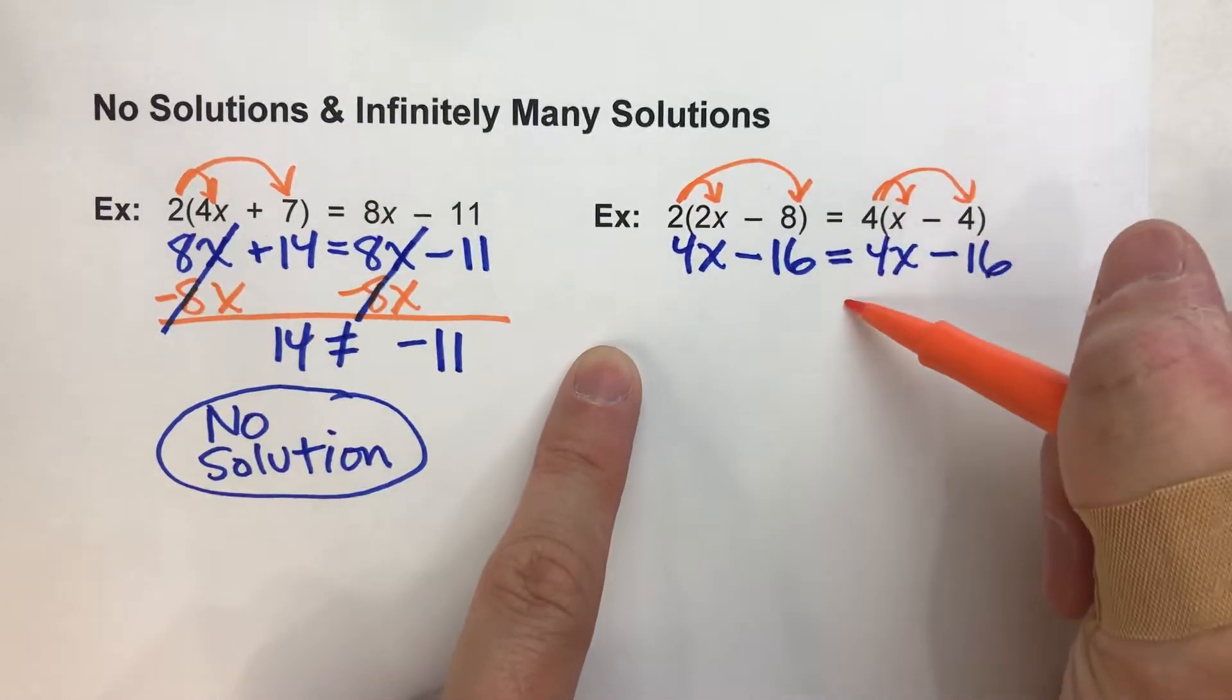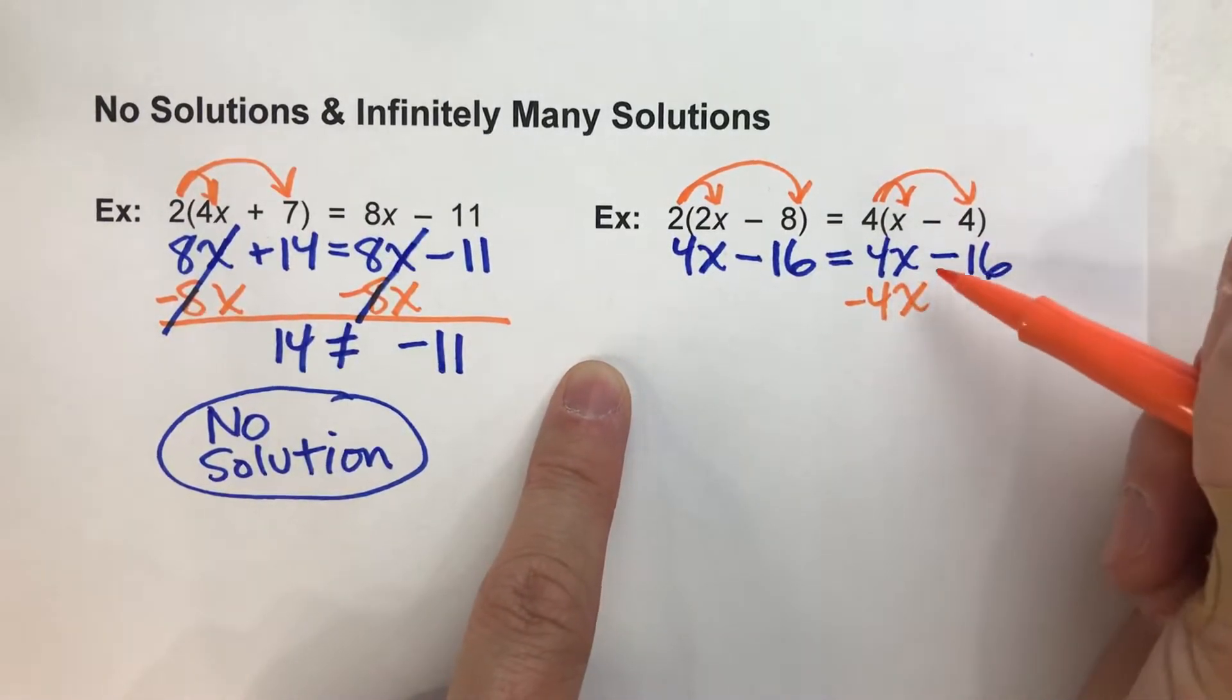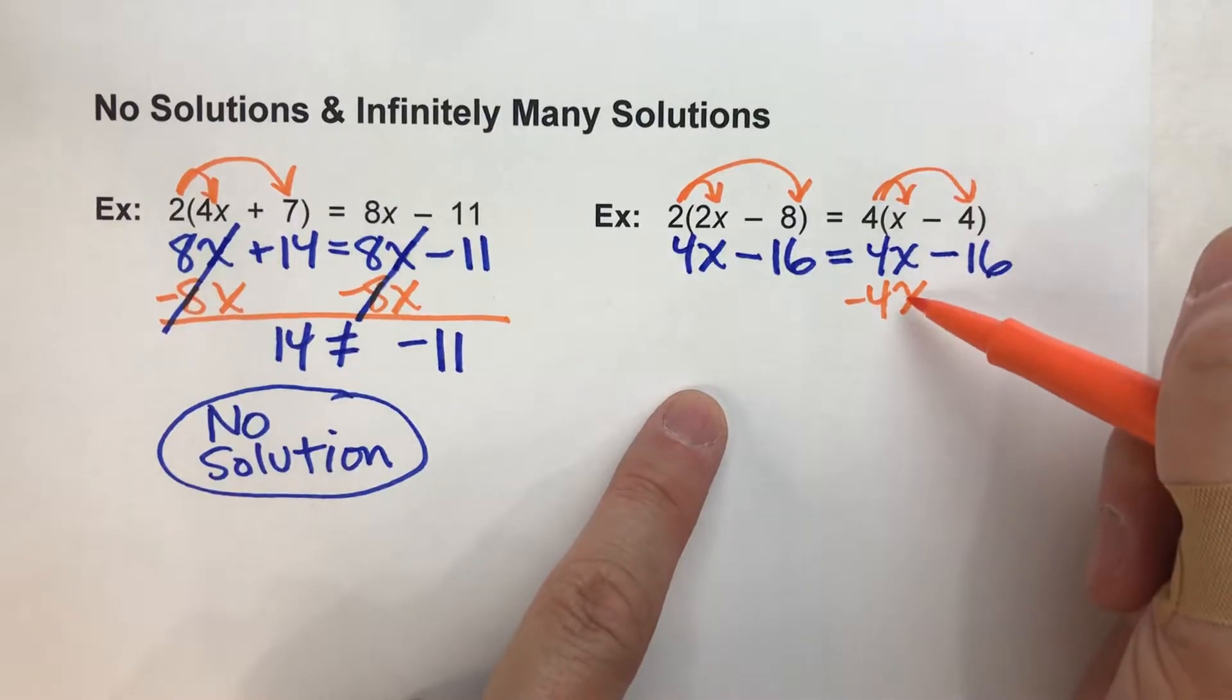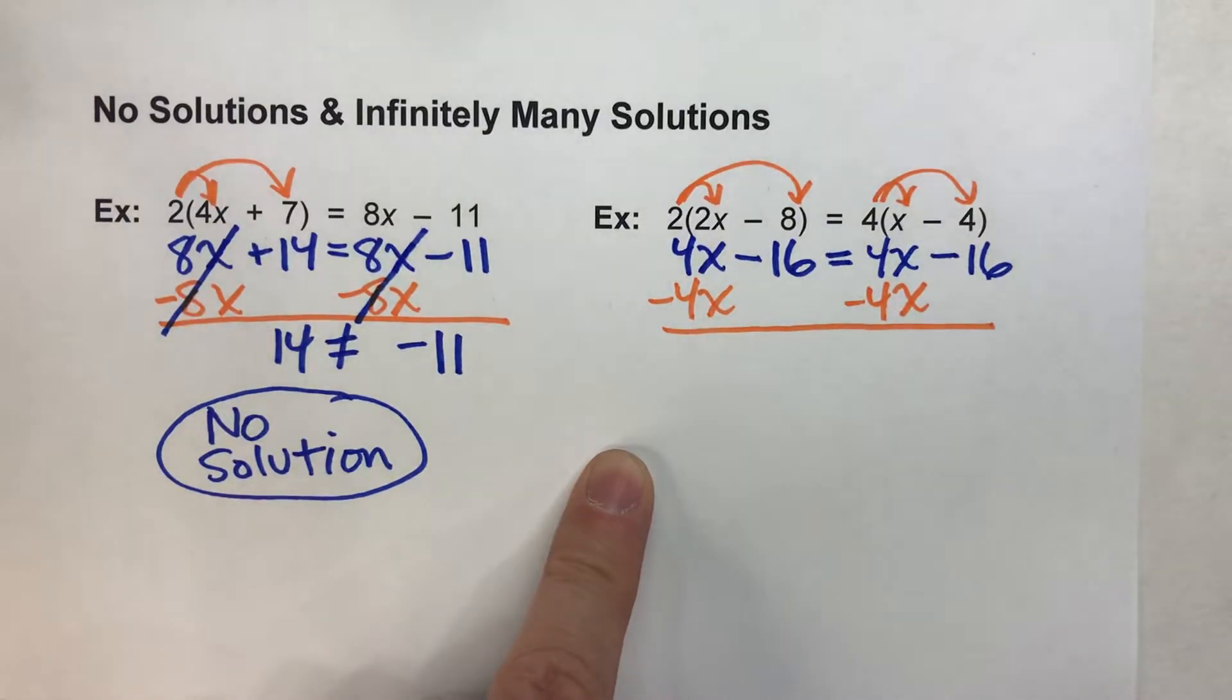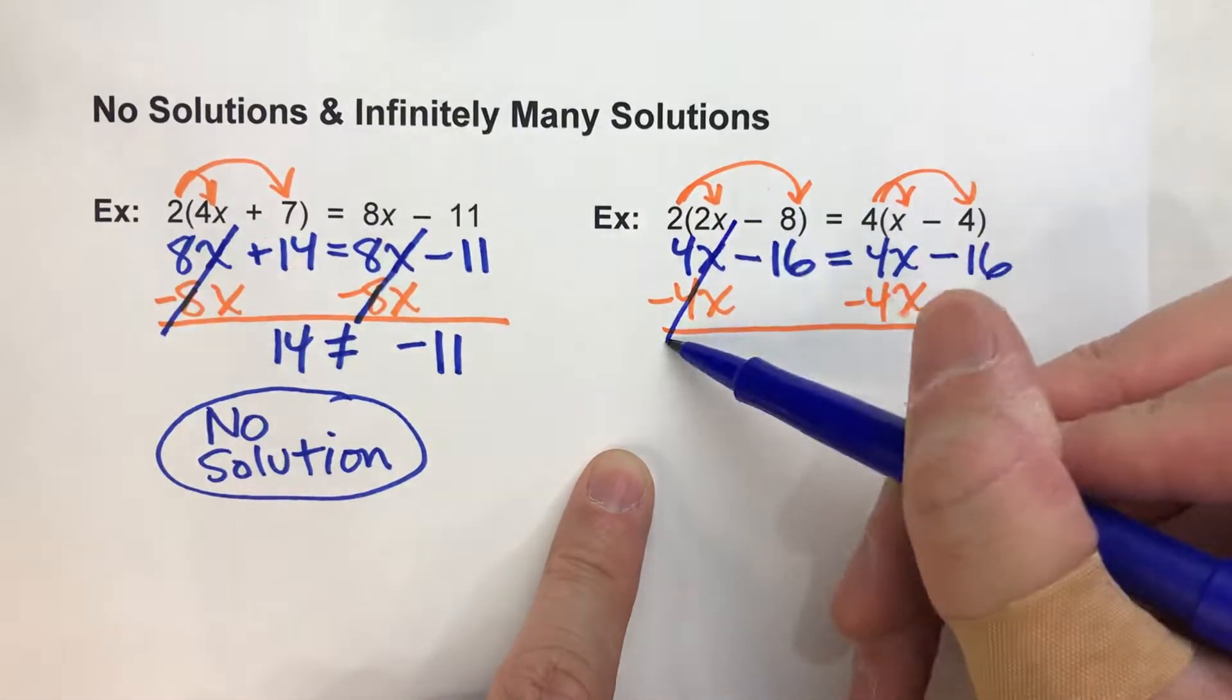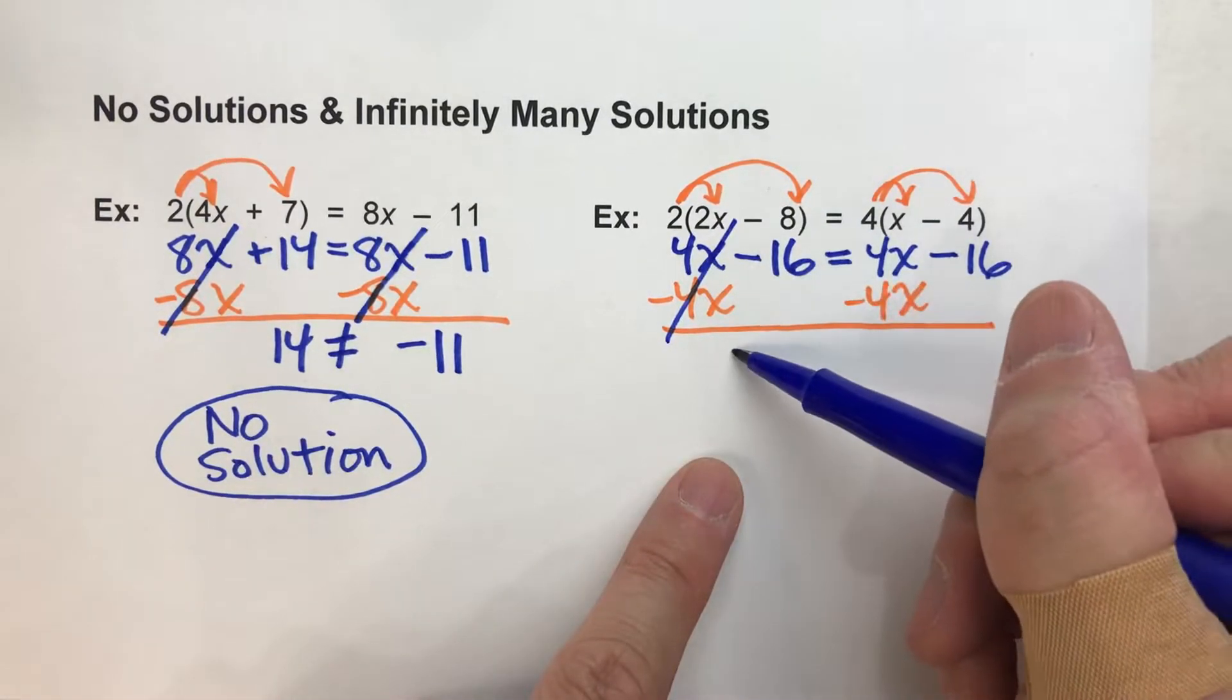So now I've gotten rid of the parentheses. I got x's on both sides. So I'm going to subtract all the x's off one side minus 4x. But what I do to one side, I have to do to the other side. Now when I do that, the x's undo each other.